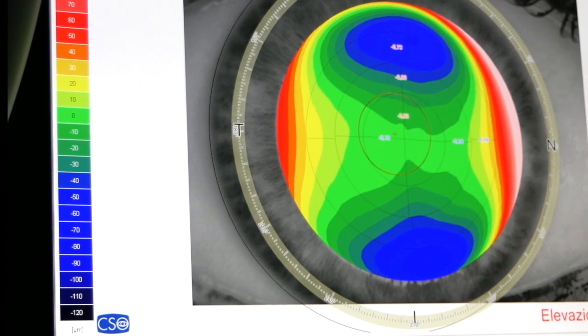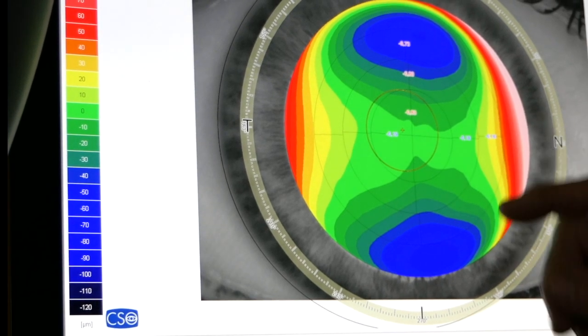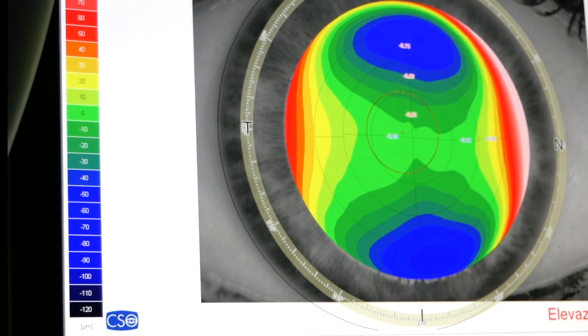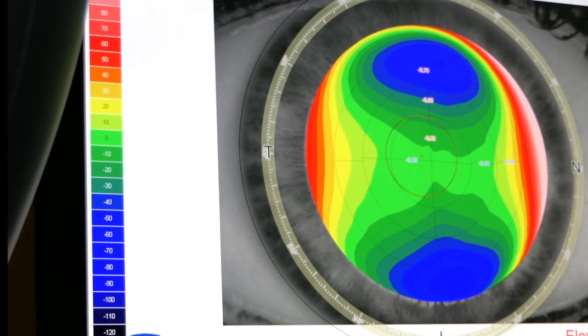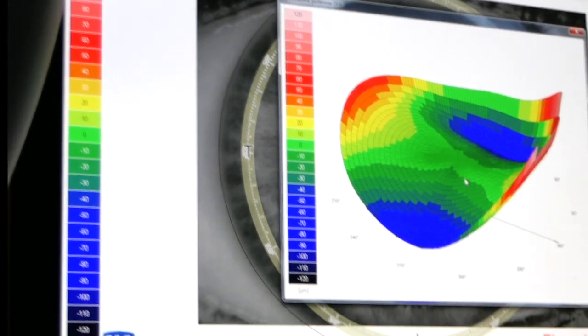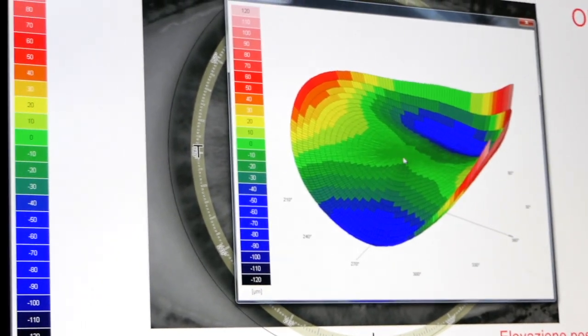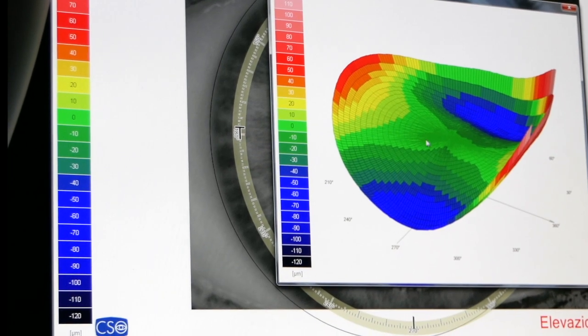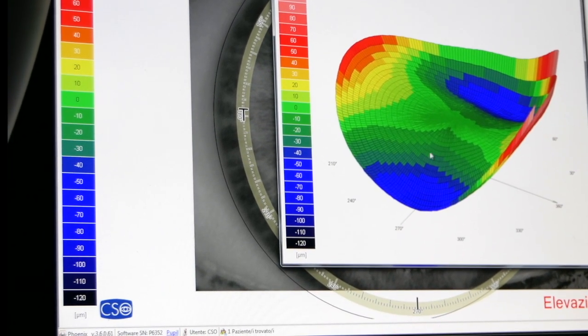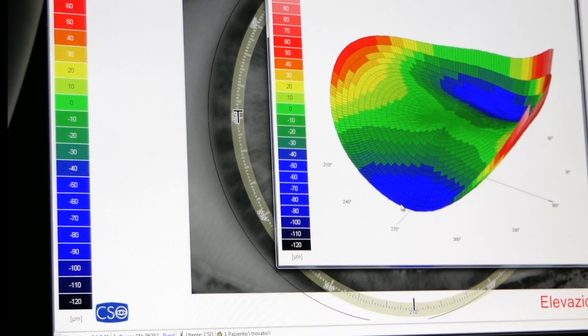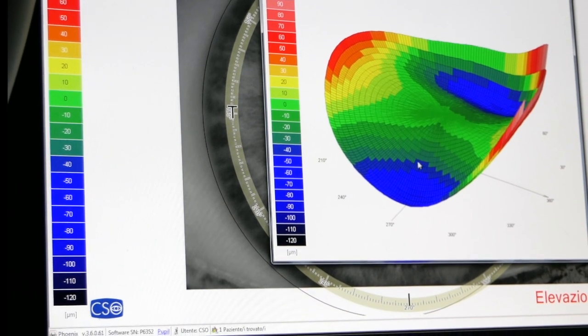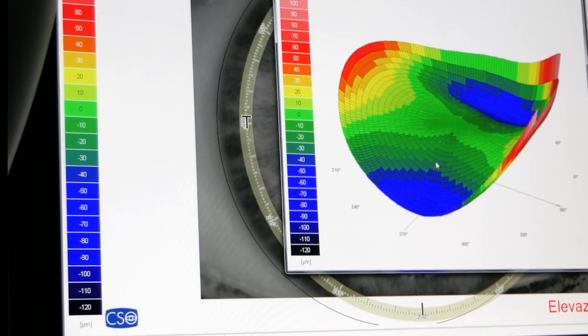The same thing can be done with the posterior cornea, that is with the face of the cornea looking towards the inside of the eye. Seen in three dimensions, we can understand that the posterior cornea is curved in this central green portion. Then later, it has two parts.